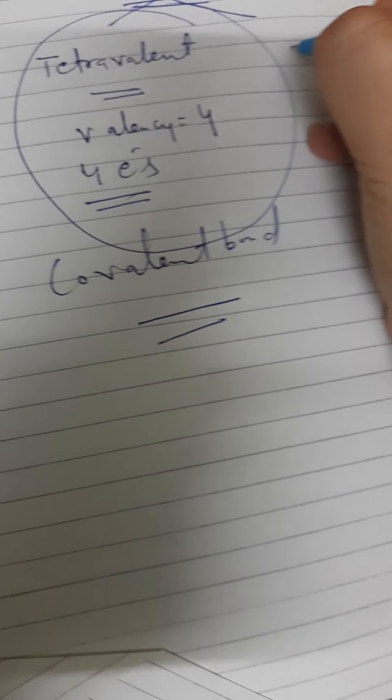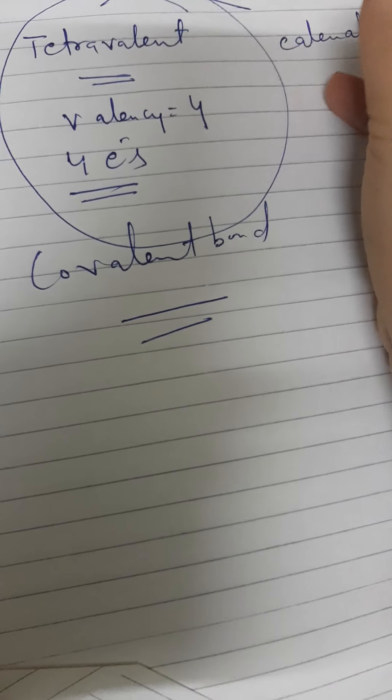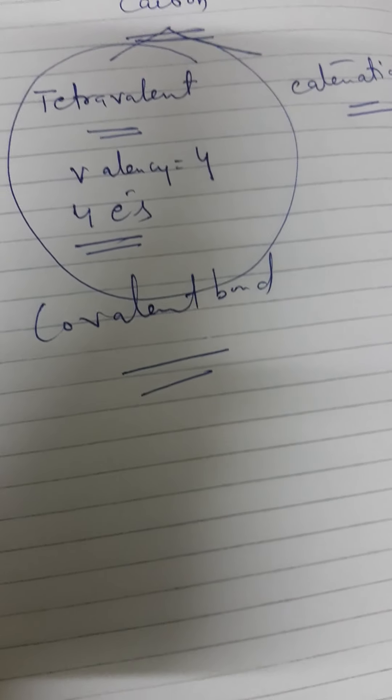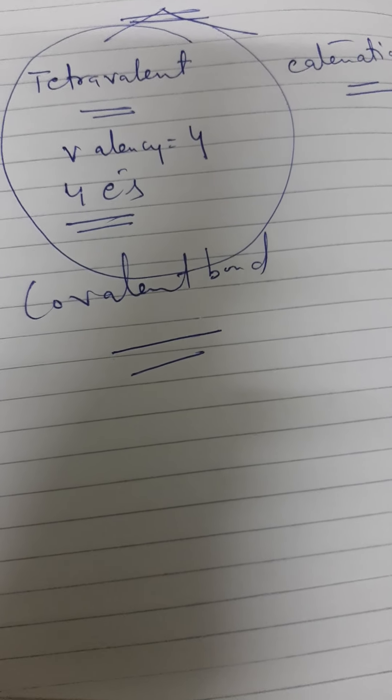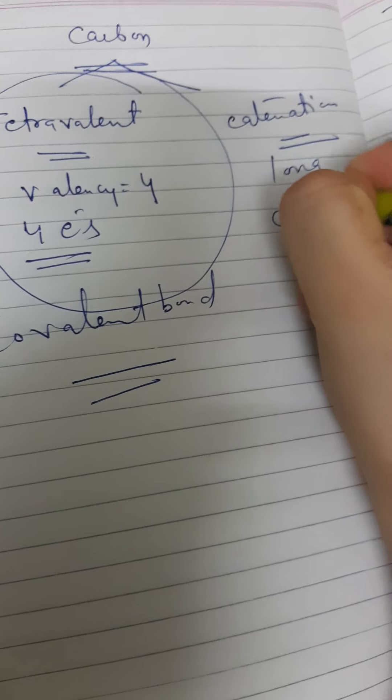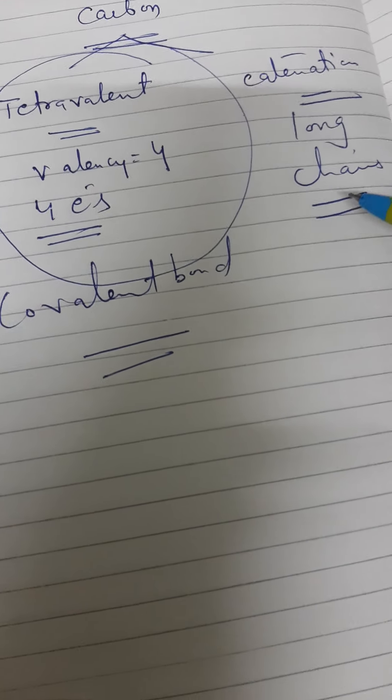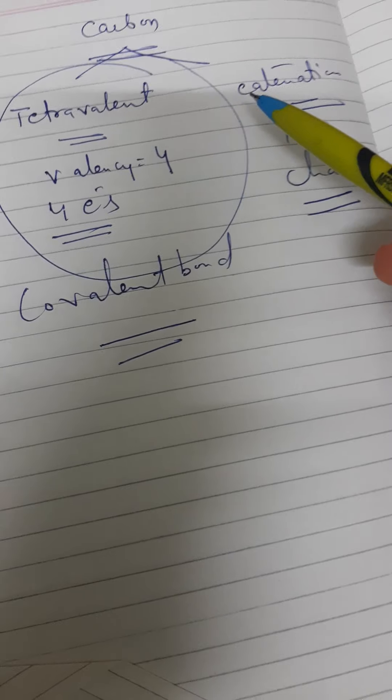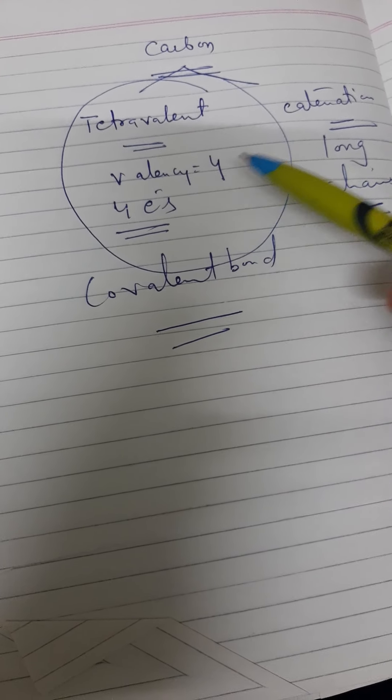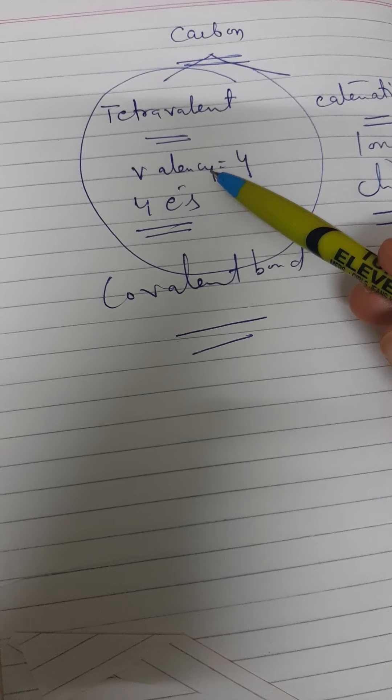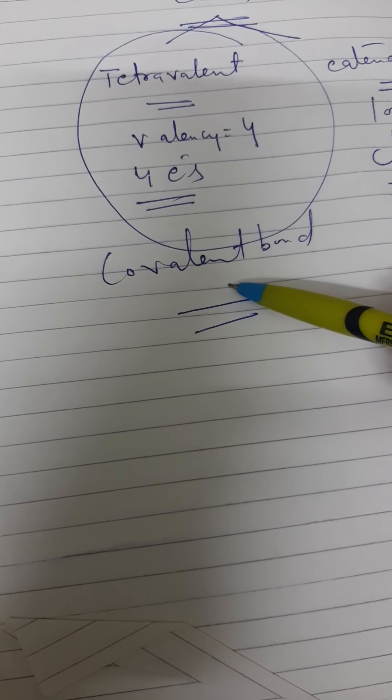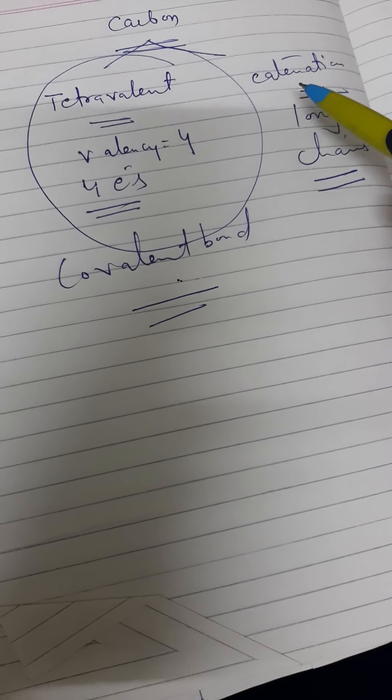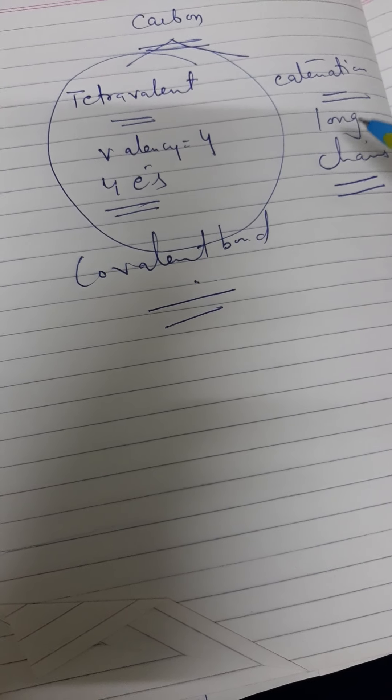The second property of carbon is that it is showing catenation. What is catenation? The property of self-combination of carbon atoms. Carbon atoms combine together to form long chains. That is long chains. So carbon is basically having unique features: tetravalent in nature, forms covalent bonds, shares electrons, neither gains nor loses. And the second property is catenation - that it will form long chains by self-combination of carbon atoms.